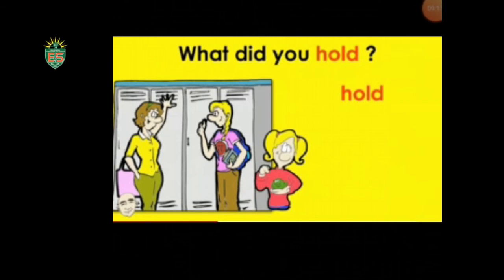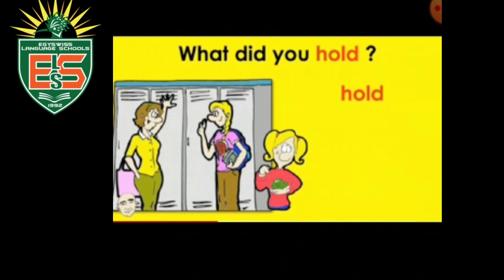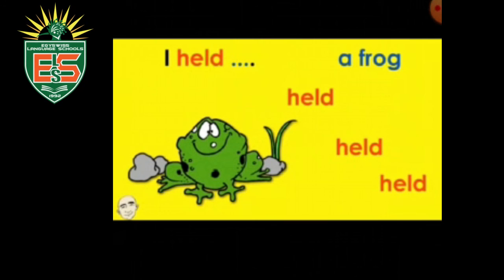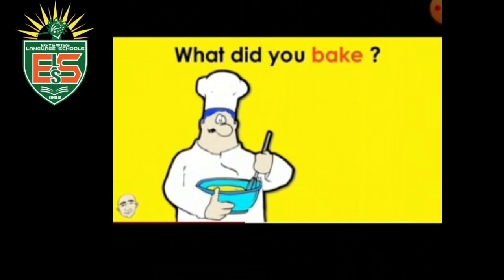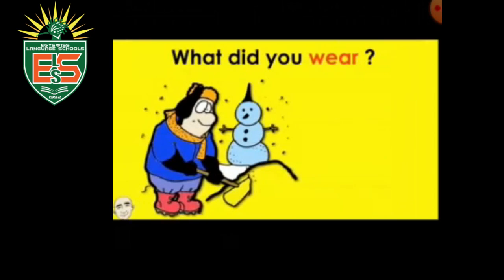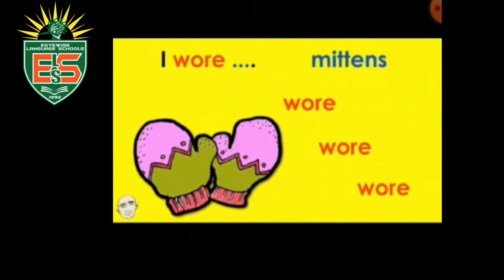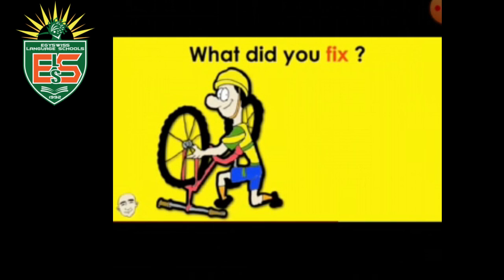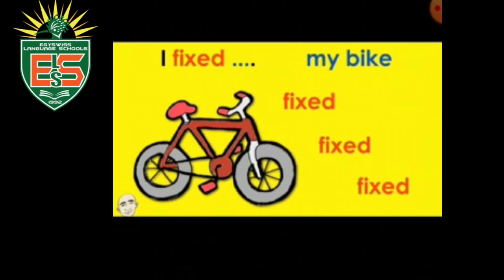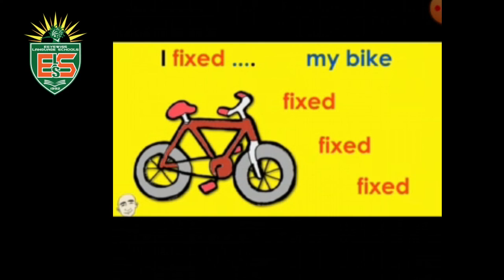Let's look at some practice questions. 'What did you hold?' — the girl answers: 'I held a frog.' 'Held' is the past form. 'What did you bake?' — 'I baked a cake.' 'What did you wear?' — 'I wore mittens.' 'Wore' is the past form of 'wear'. 'What did you fix?' — 'I fixed my bike.' Now we have finished our lesson for today. If you have any questions, ask me in the discussion. Thank you very much!